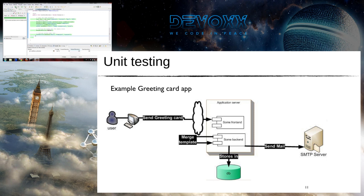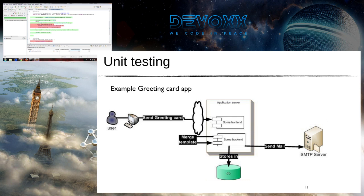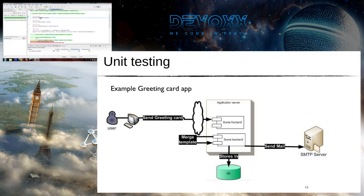If I run it with my coverage tool — I use EclEmma in Eclipse — you can see we tested the happy scenario; the catch block isn't covered yet. And importantly, since it's in isolation, the DAO is never actually invoked. No real DAO is called — everything is tested in isolation. We now have a test of our service without calling anything else. Easy setup, no boilerplate code — exactly what we wanted.